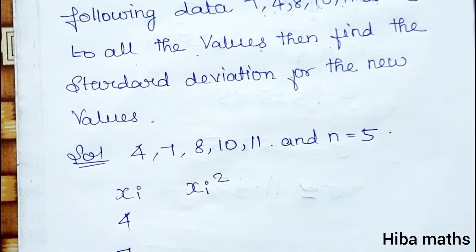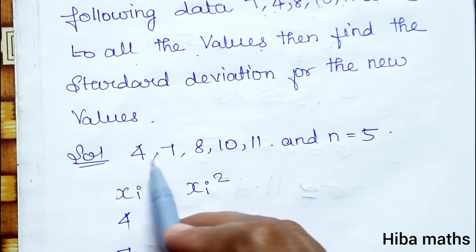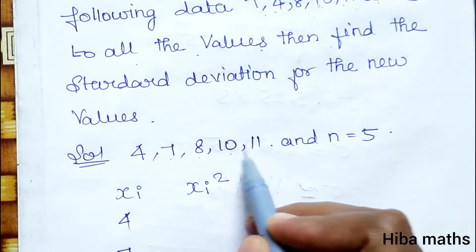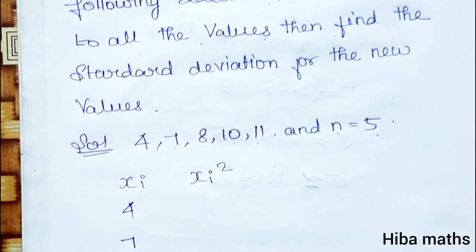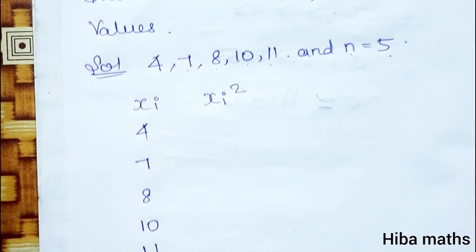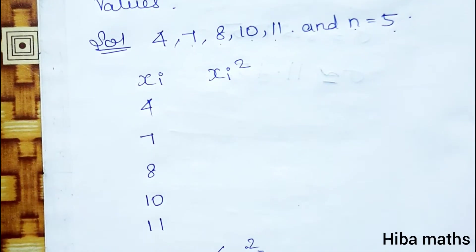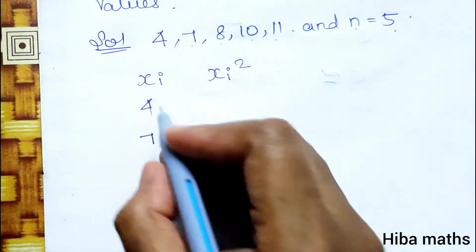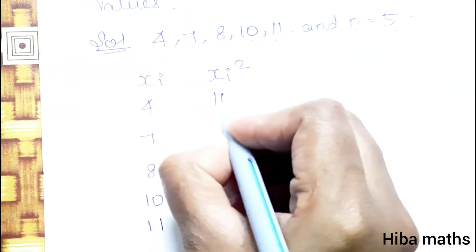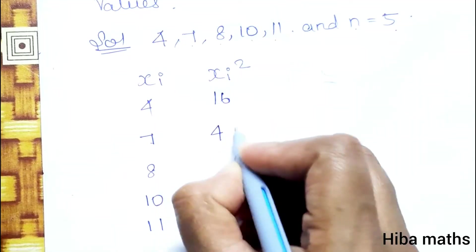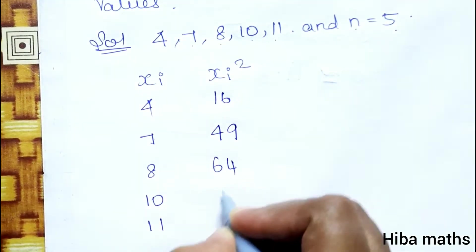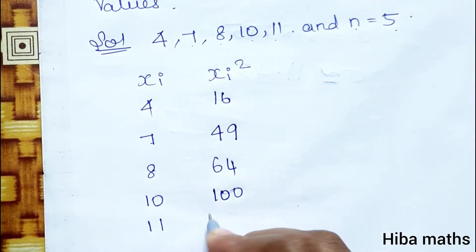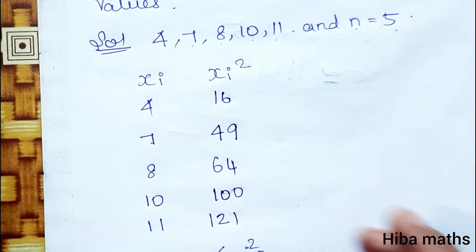The values are 4, 7, 8, 10, 11 and N is 5. Since N is very small, we can solve it easily. Xi values are 4, 7, 8, 10, 11 and Xi² values are 16, 49, 64, 100, 121.